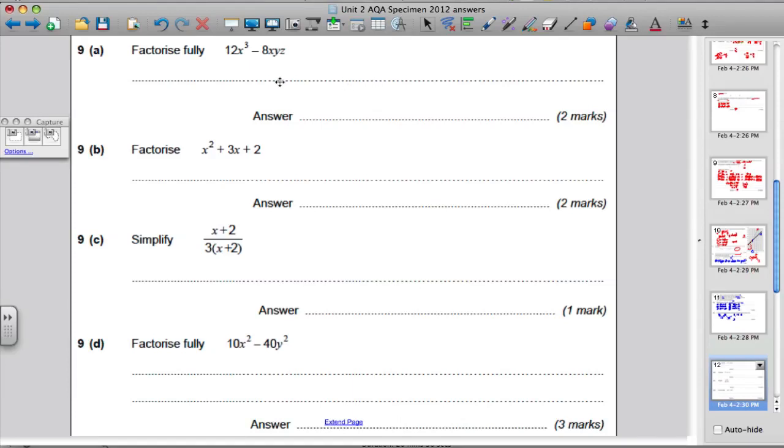Question 9. Factorise fully 12x cubed minus 8xyz. OK, what we're going to ask ourselves is, what is the highest common factor of the 12 and the 8, first of all? That is, what's the biggest number that divides into 12 and 8? Well, it's 4.